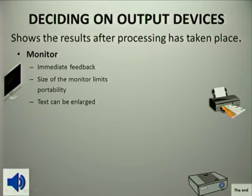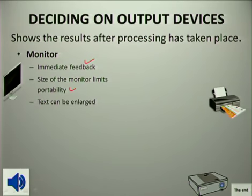The first output device is a monitor. A monitor gives immediate feedback. The size of the monitor will obviously limit the visibility, and text can be enlarged on a monitor.